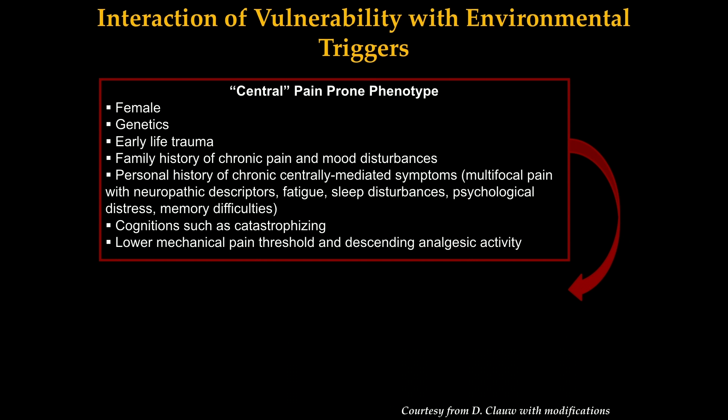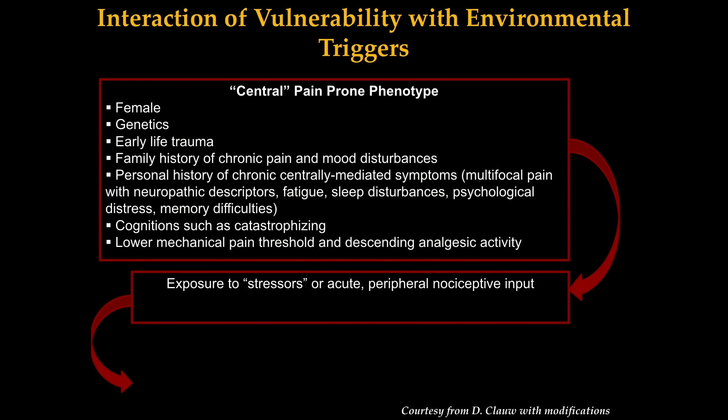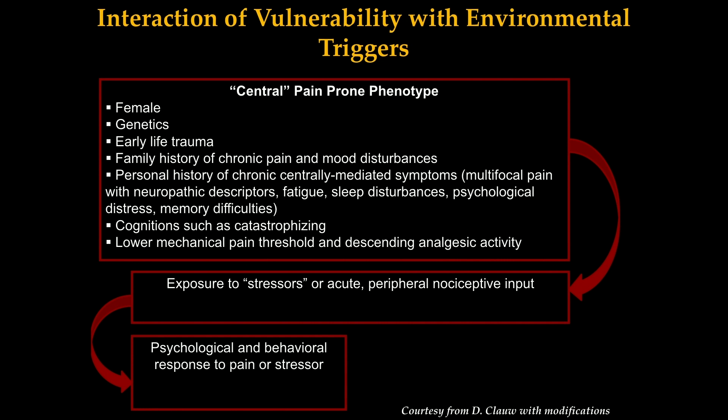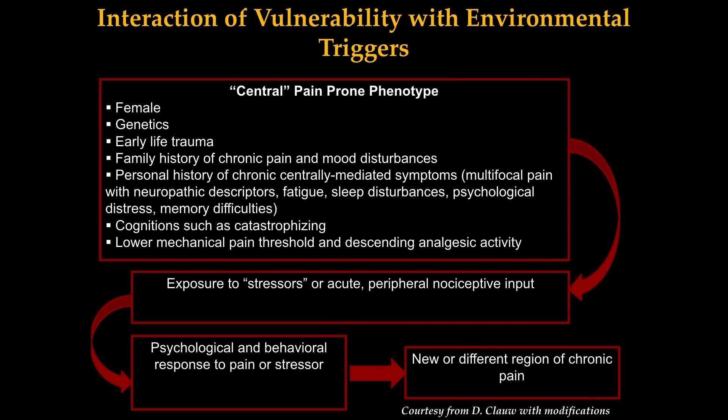Looking at it as a different paradigm, we think there might be individuals who are pain prone — and this might include gender, genetics, early life trauma, family history of chronic pain and mood disturbances, personal history of centrally mediated symptoms such as fatigue, depression, and memory difficulties, and particular cognitions like catastrophizing that are personality traits and really not very changeable. This might all lead to lower mechanical pain thresholds, so that when these individuals are exposed to a bad or recurring urinary tract infection or a local insult to a particular organ, they can have this over-response and psychological-behavioral response to pain that leads to chronic maintenance of symptoms.